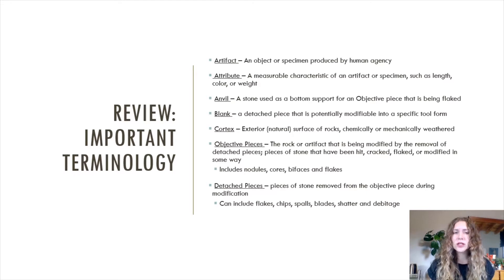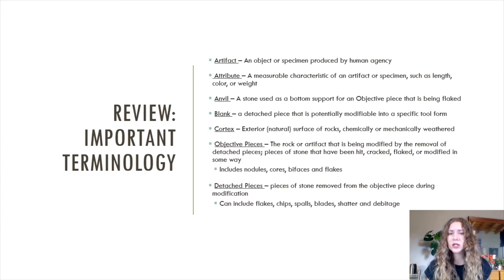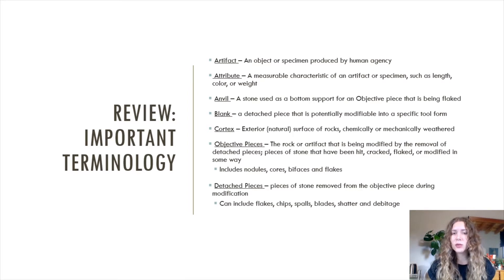In this lecture, we'll be expanding a little bit on artifacts, which are objects or specimens produced by human agency. Anvils, which are stones used as a bottom support for an objective piece that is being flaked. We'll also be talking more about blanks, which are detached pieces potentially modifiable into a specific tool form, and cortex, which is the exterior or natural surface of rocks.